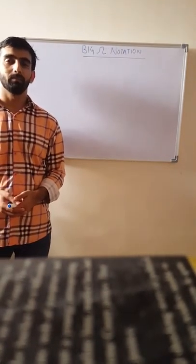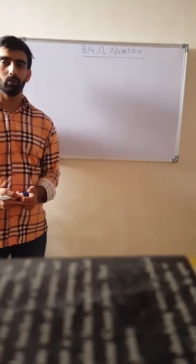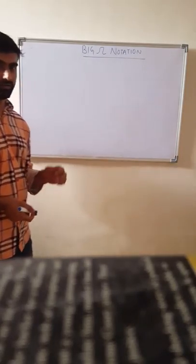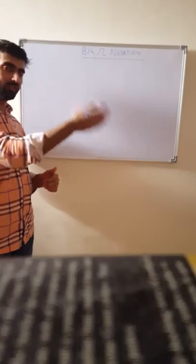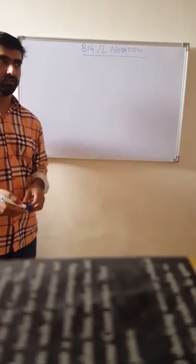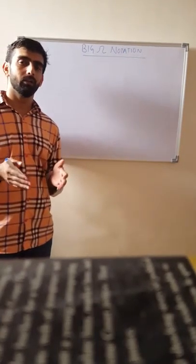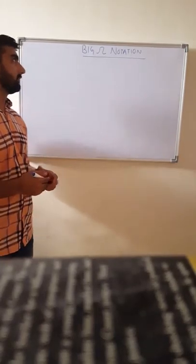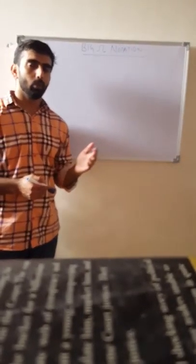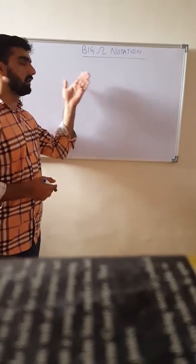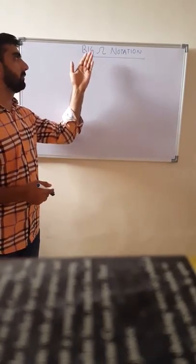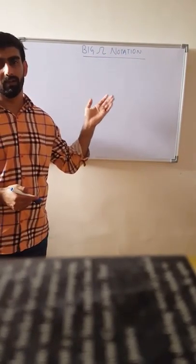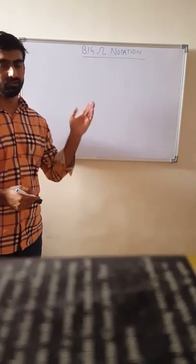Hi guys, my name is Mandip and in today's video we are going to discuss Big Omega notation. In our previous video we discussed Big O notation, and in the next video we will discuss Big Theta notation. All these notations are asymptotic notations in data structures and algorithms. Following tradition, we will first discuss the theoretical definition of Big Omega notation, then go through an example.